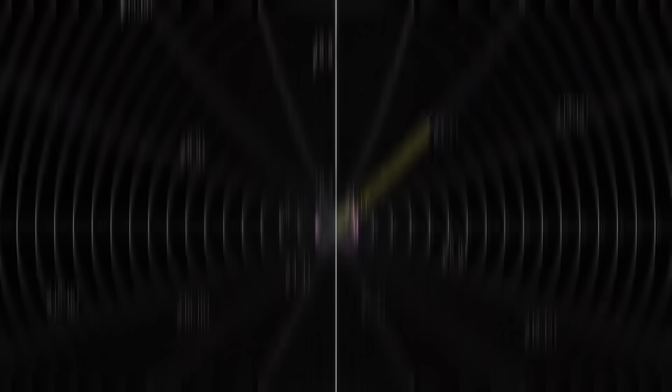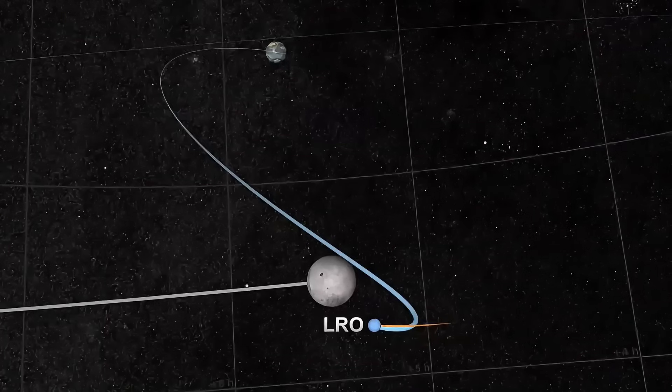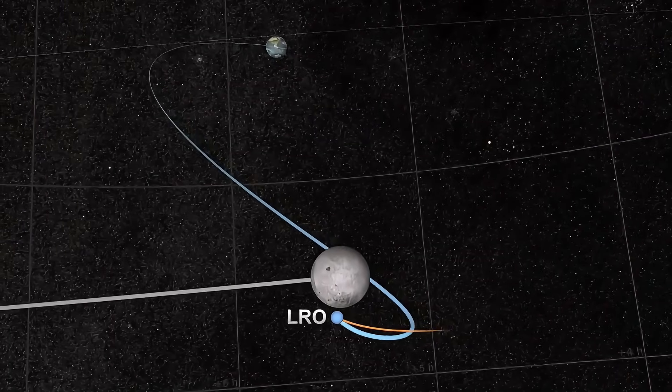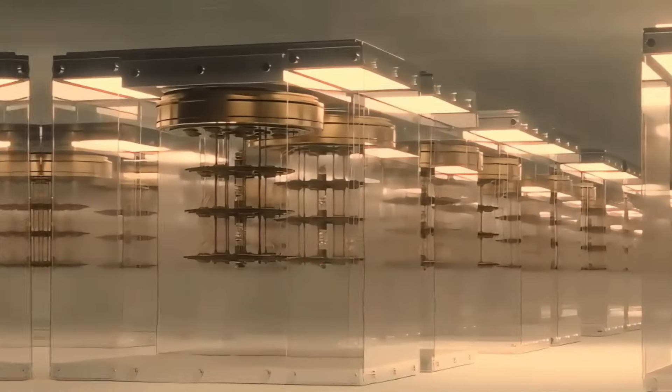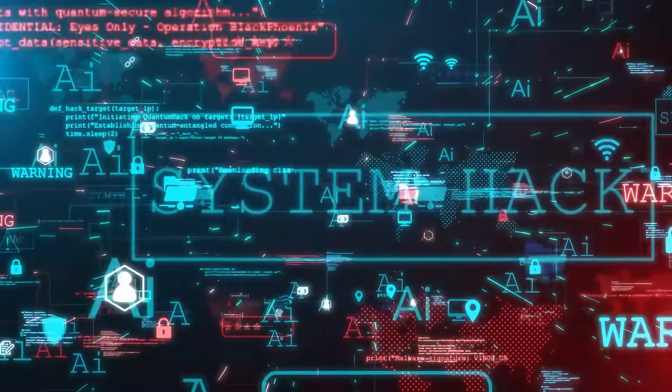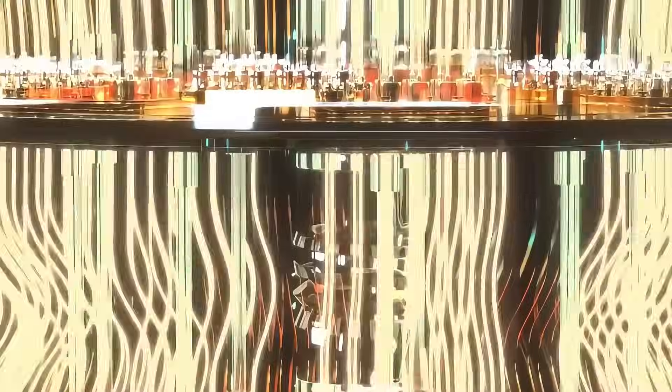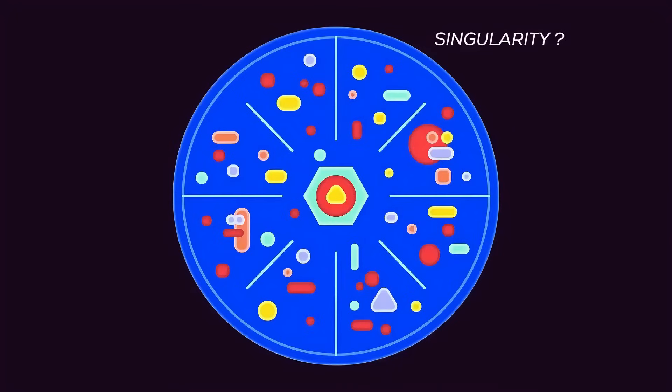A rift in this fabric suggests that, under certain conditions, space-time might behave in ways that are completely unaccounted for by existing theories. This could lead to a major overhaul of the laws of physics, with ripple effects across multiple scientific disciplines.